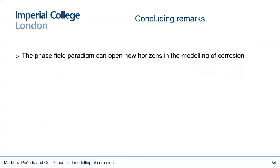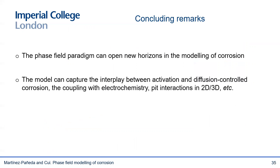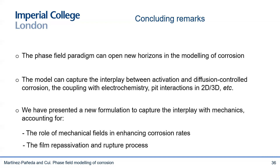Let me conclude with a few remarks. First, I think that phase field methods have the potential to unravel this long-standing challenge of modeling localized corrosion — I think we will see a revolution like we have seen in fracture mechanics and microstructural evolution. Second, the model is not only computationally very powerful, but also physically sound. We have shown that it can capture the interplay between activation and diffusion control corrosion, the coupling with electrochemistry, pitting interactions in 2D and 3D. Third, we have presented a formulation that couples phase field corrosion with mechanics for the first time, incorporating the role of mechanics in enhancing corrosion rates, and the ubiquitous film repassivation and rupture process, which allows us to reproduce the localization phenomena that we see in experiments.